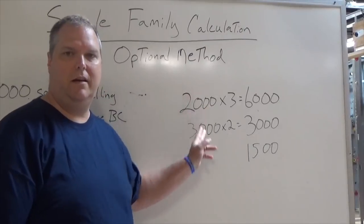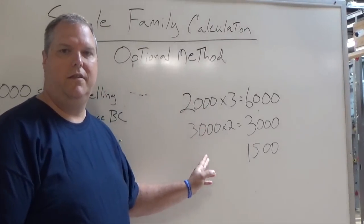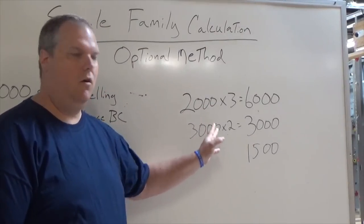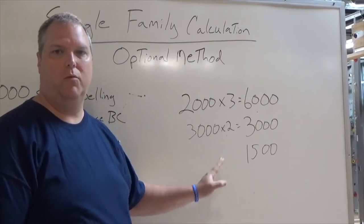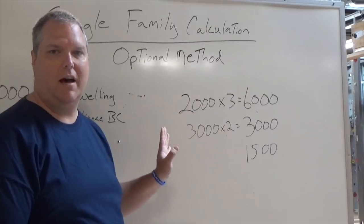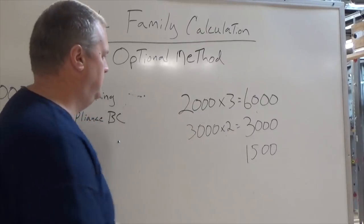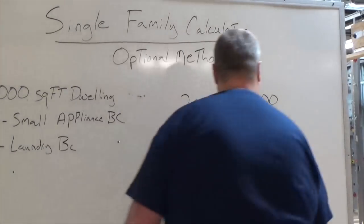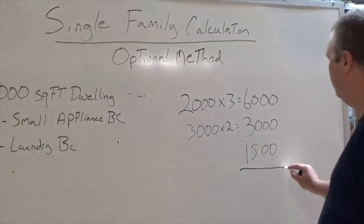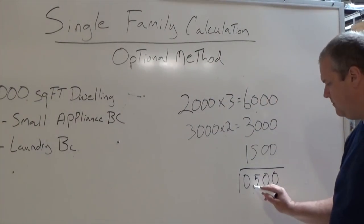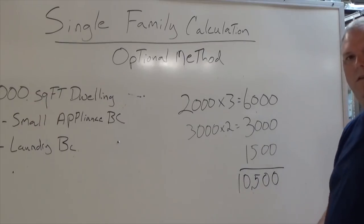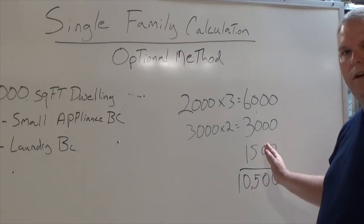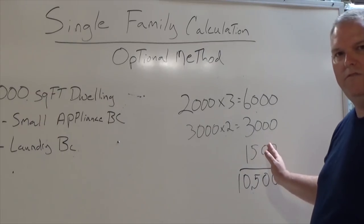We add those three values together — 6,000 plus 3,000 plus 1,500 — and set that subtotal aside. We come up with 10,500 VA.